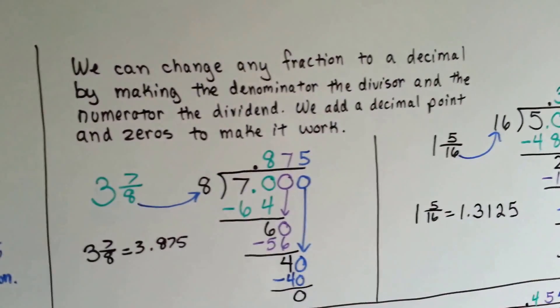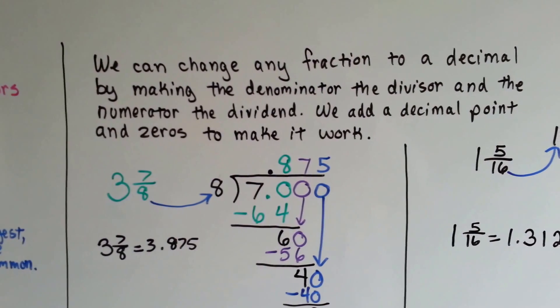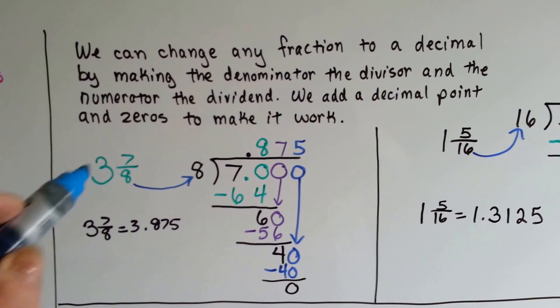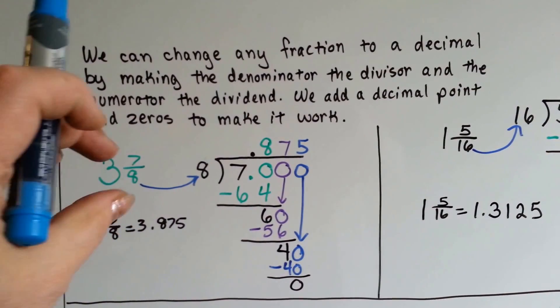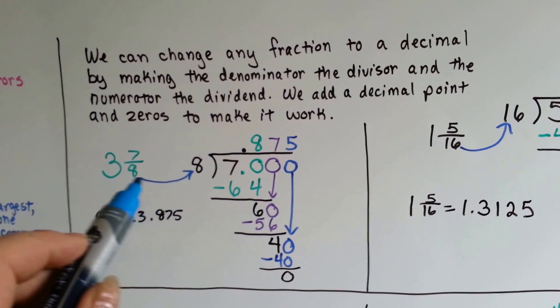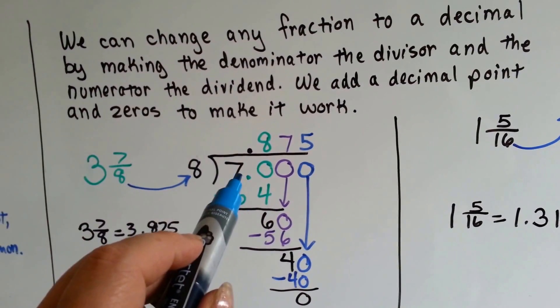We can change any fraction to a decimal by making the denominator the divisor and the numerator the dividend. We add a decimal point and 0's to make it work. 3 and 7/8, we put the 3 off to the side and just deal with the 7/8. The 8 becomes the divisor. The 7 becomes the dividend.